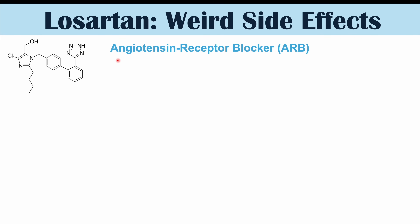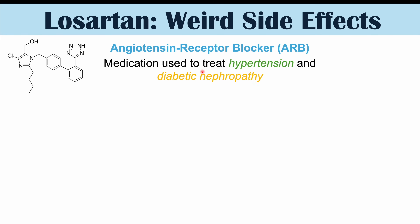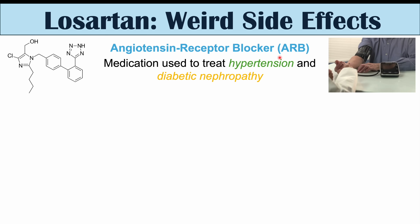Losartan is an angiotensin receptor blocker, or an ARB. It's a medication used to treat hypertension and diabetic nephropathy. It's a very good medication for these purposes in the sense that in patients with hypertension and left ventricular hypertrophy — where the left side of the heart becomes enlarged — Losartan can inhibit certain cardiac remodeling. It can also be protective for kidney functioning in diabetes, which is why it's important for diabetic nephropathy.